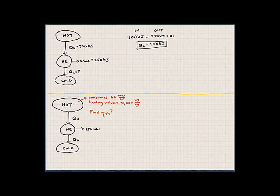Now this one's a little bit different. Let's take a look at it. We have a hot temperature source - we're going to say this hot temperature source is a coal power plant. The coal power plant consumes 60 tons per hour of coal, and the coal has a heating value or an energy amount in it of 30,000 kilojoules per kilogram.